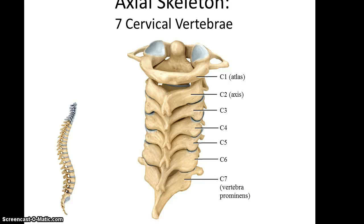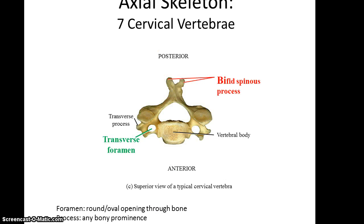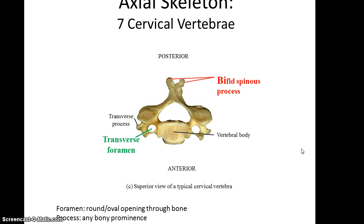Here are the seven cervical vertebrae, labeled C1 through C7. The first two have their own names: C1 is also known as the atlas and C2 as the axis. When you look at a cervical vertebra, it has a few features found only in this part of the vertebral column. It has a bifid spinous process — two protrusions coming out of the spinous process. Within the transverse process, you will find a transverse foramen, so it has these extra holes.